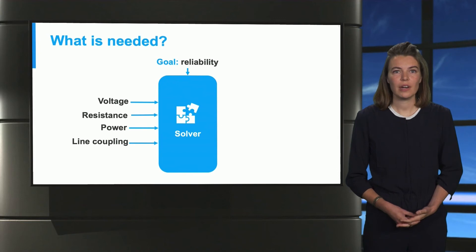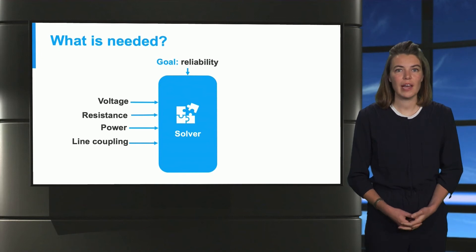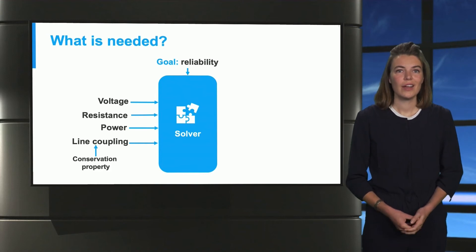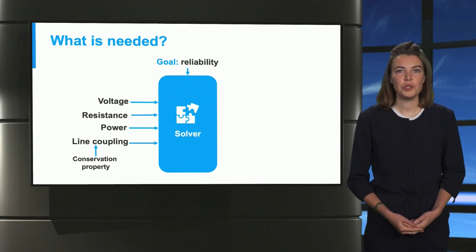Different properties of the network are used as input to the solver, such as the voltage, the resistance of power lines, the generated power, and coupling of the different lines. Note that in all nodes at each instant, the energy conservation property should be satisfied. In the end, we want to have an optimal operation of the different networks.